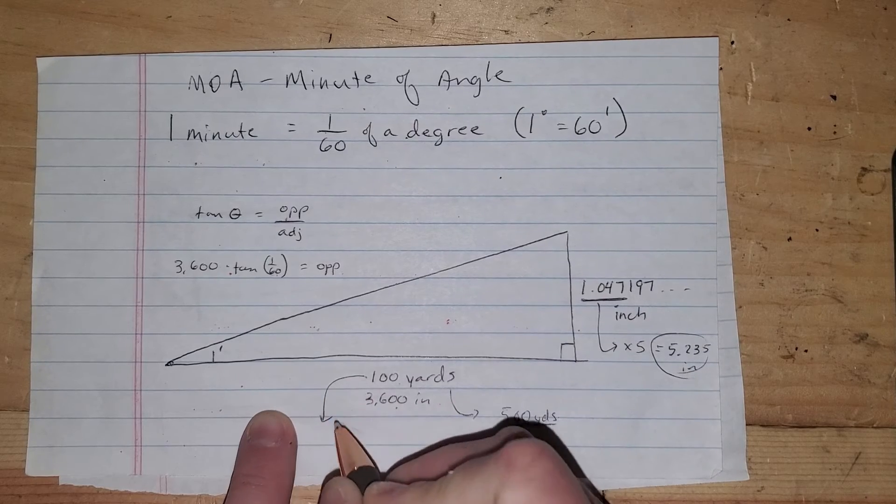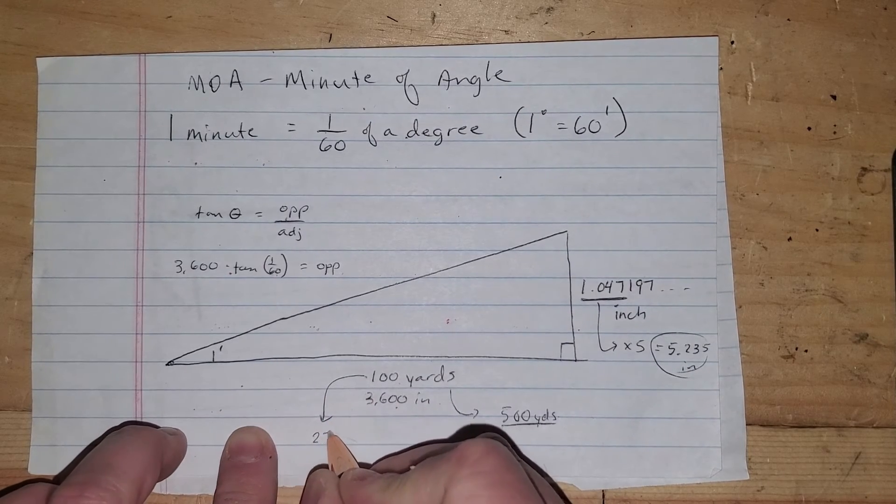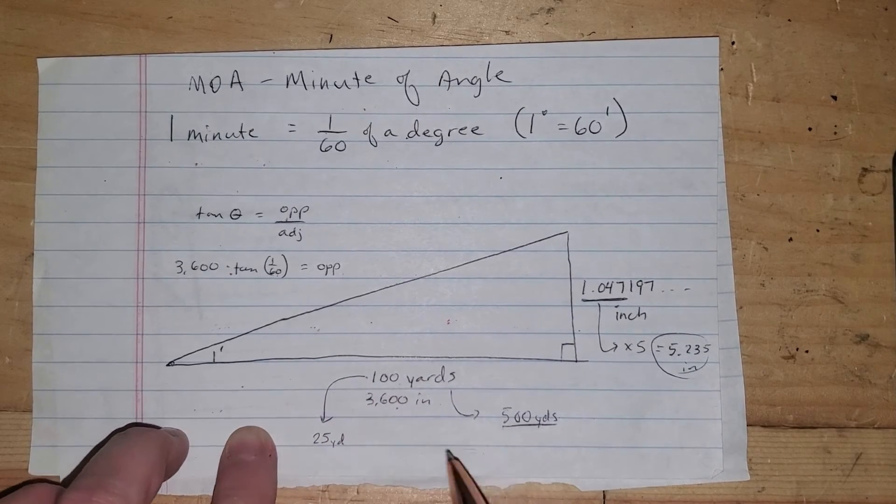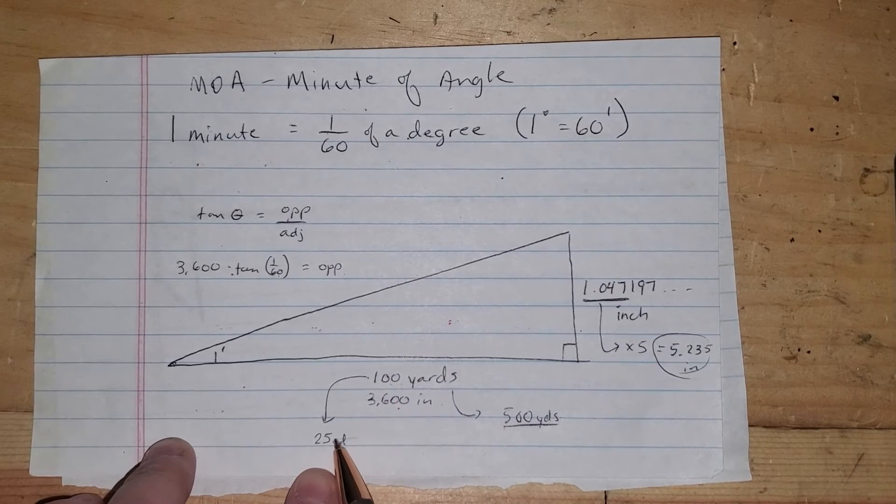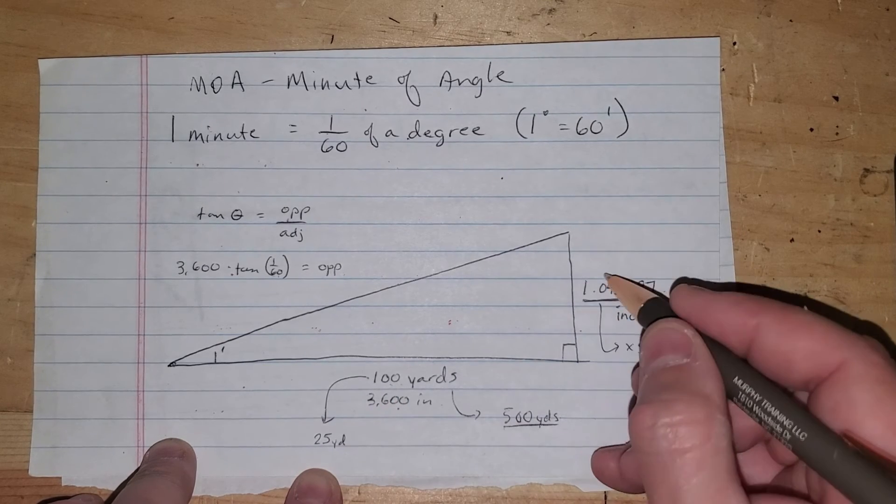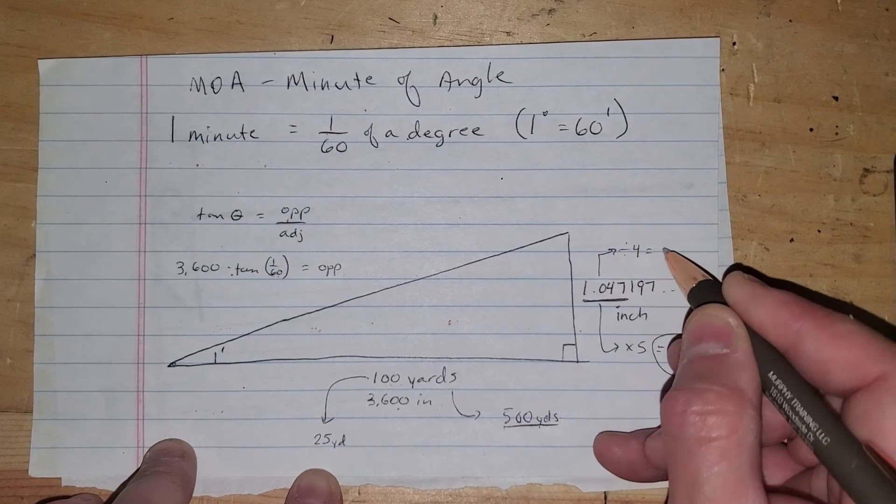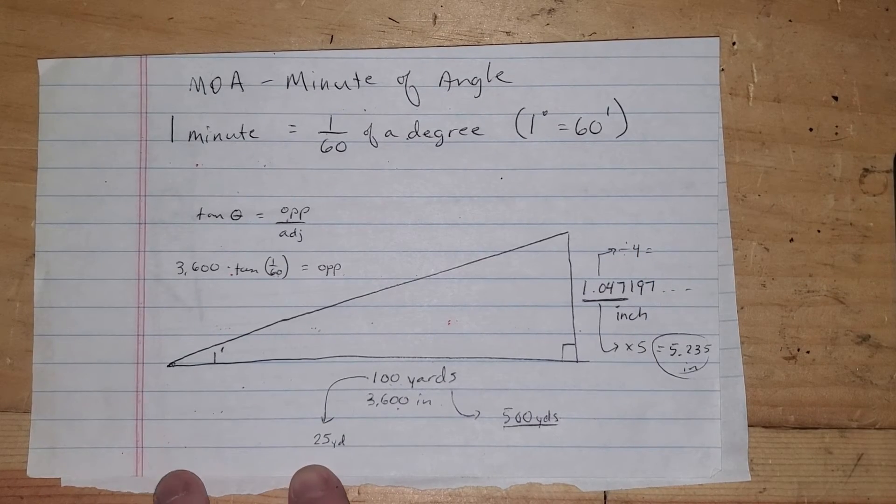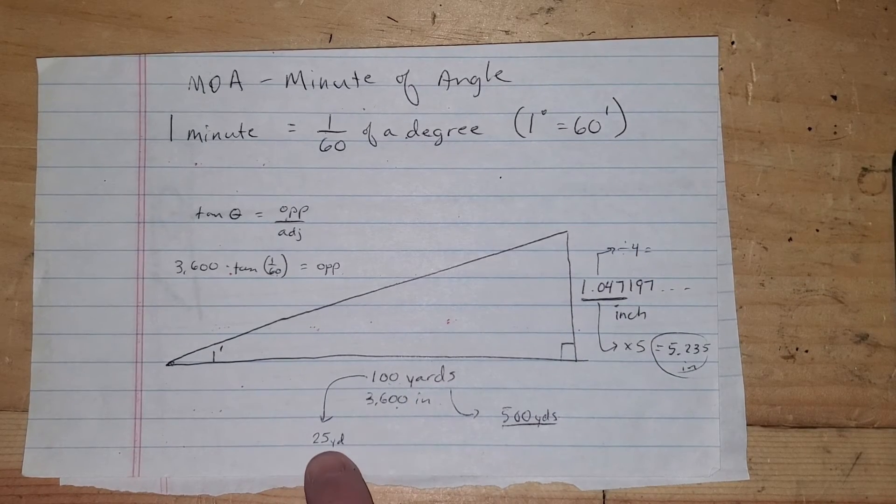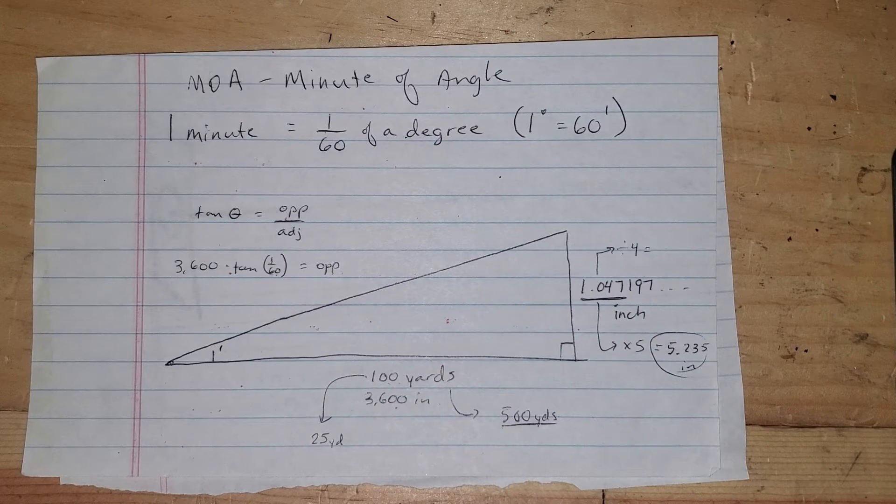By the way, it does go the other way. If instead of 100 yards, if I cut this down to 25 yards, which is this divided by four, then this would also be, guess what, divided by four. And it would be about a quarter of an inch. So one MOA at 25 yards is about a quarter of an inch.